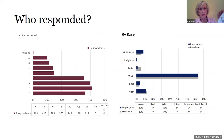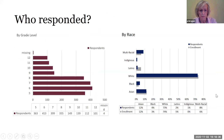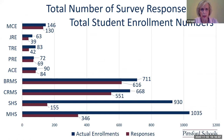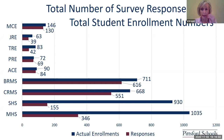Who responded to our survey? This gives you a general overview of the students who responded by grade level and by race and ethnicity. This also gives you an overall look at the number of students who responded versus the enrollment at that time. For example, at Menden Center, there were 146 students eligible to participate and 130 participated.